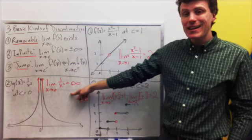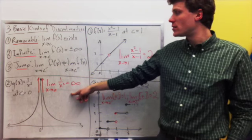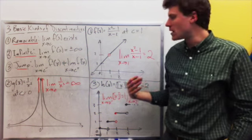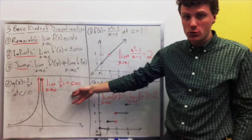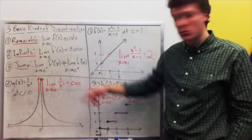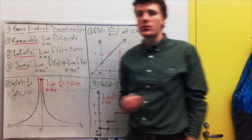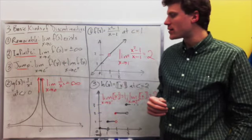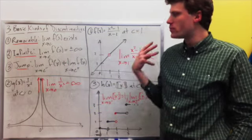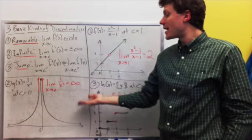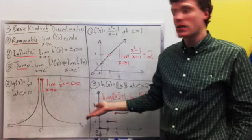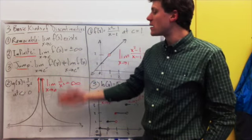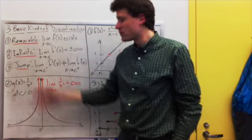The second kind is an infinite discontinuity, and this is where the limit as we approach c is plus or minus infinity. For example, 1 over x squared at x equal to 0: the function goes off to infinity. We can't fix this function by redefining it at 0, because we can't let the value of the function be equal to infinity — it has to be a number — and there's no way that this function could ever be continuous over here.